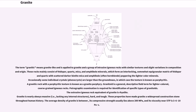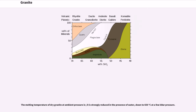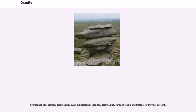The average density of granite is between 2.65 and 2.75 g/cm³, its compressive strength usually lies above 200 MPa, and its viscosity near STP is 3–6 × 10¹⁹ Pa·s. The melting temperature of dry granite at ambient pressure is 1215–1260°C, which is strongly reduced in the presence of water, down to 650 degrees Celsius at a few kilobar pressure. Granite has poor primary permeability overall, but strong secondary permeability through cracks and fractures if they are present.